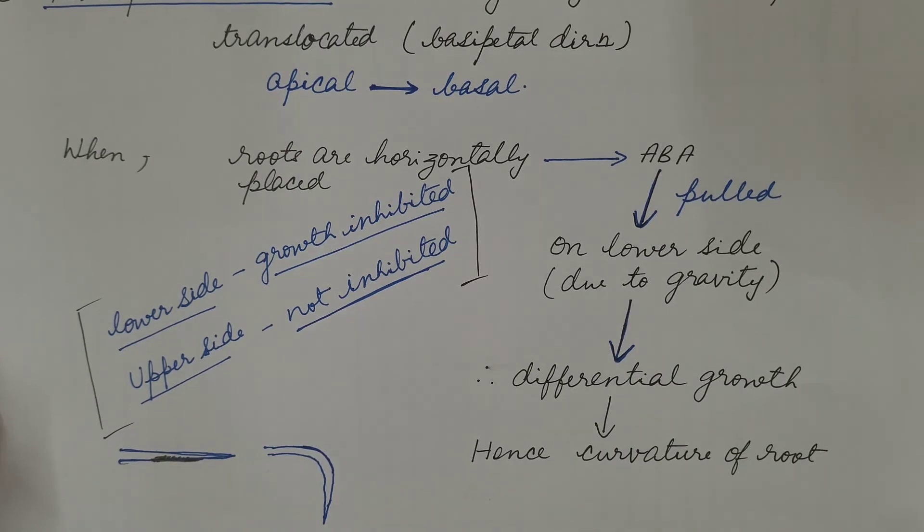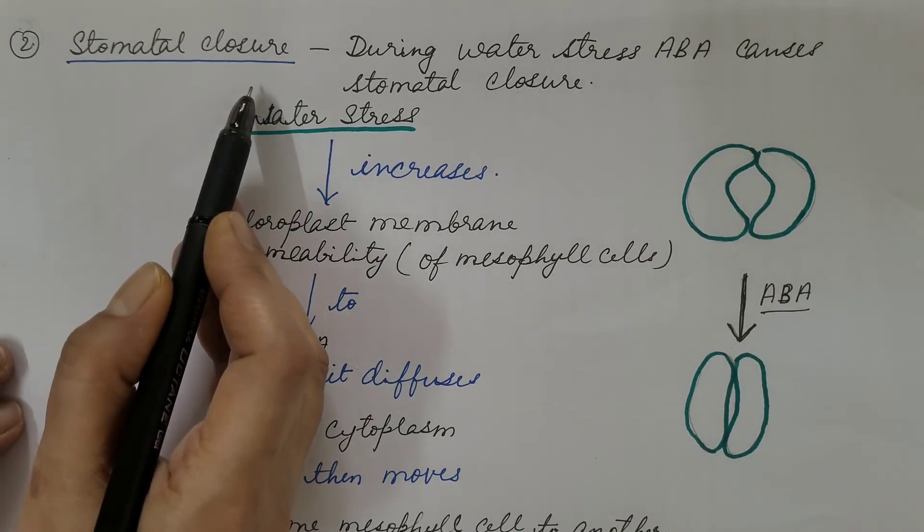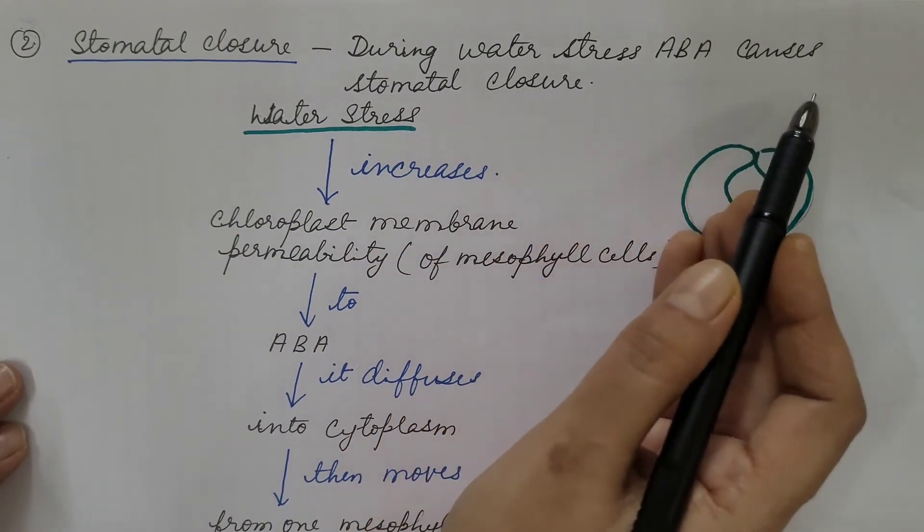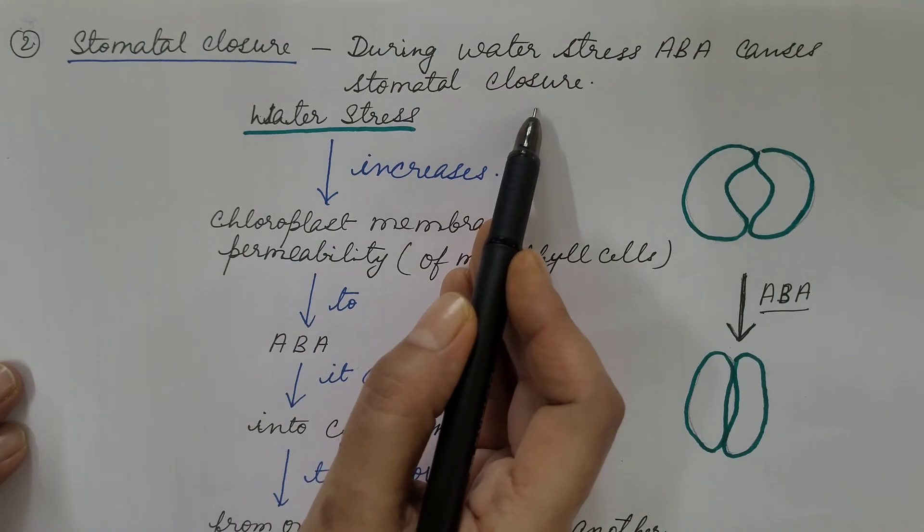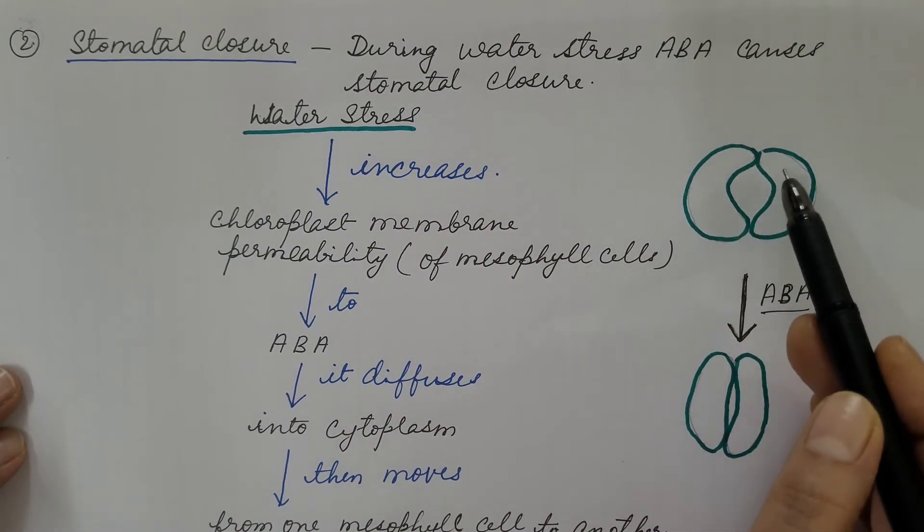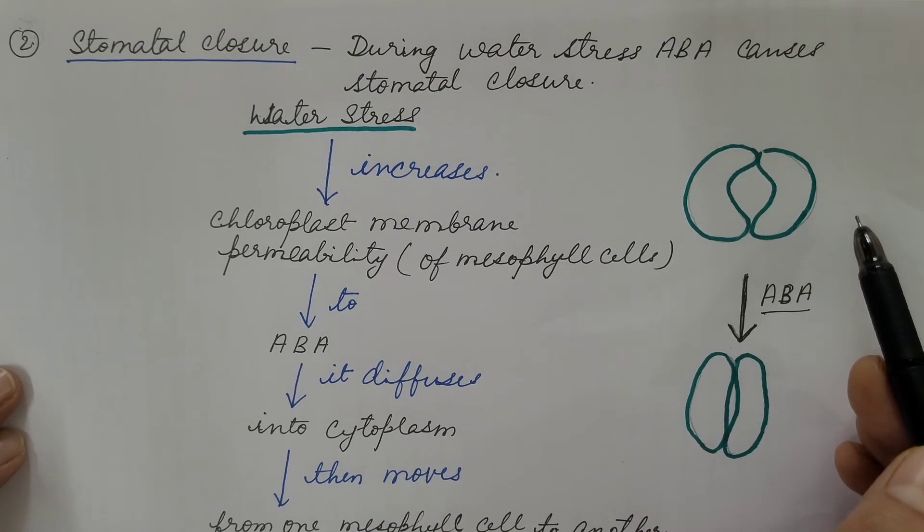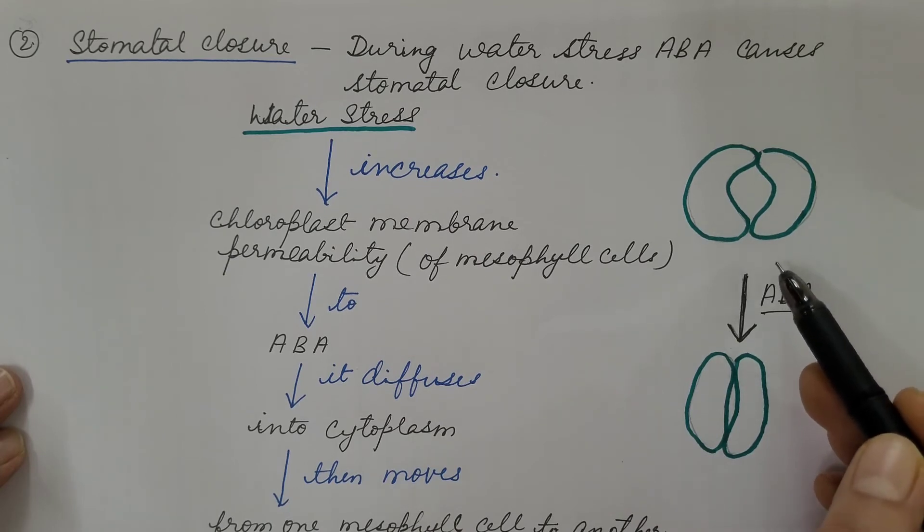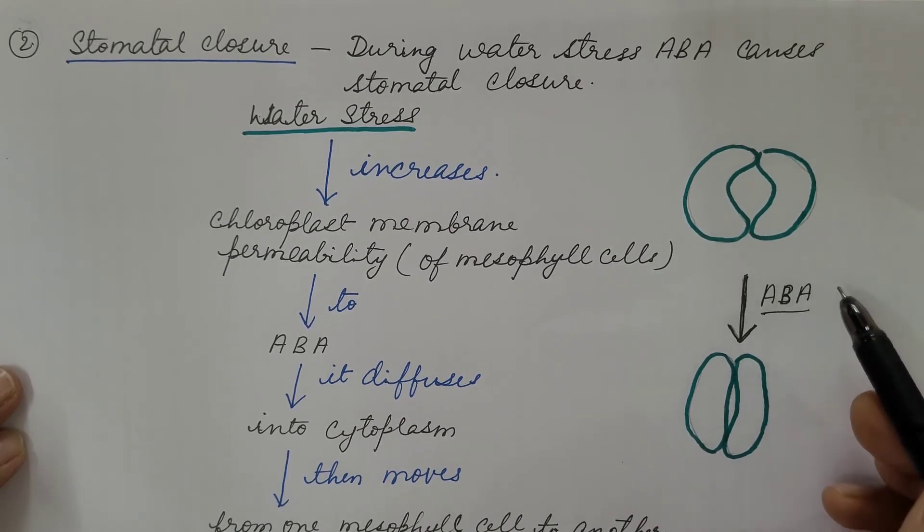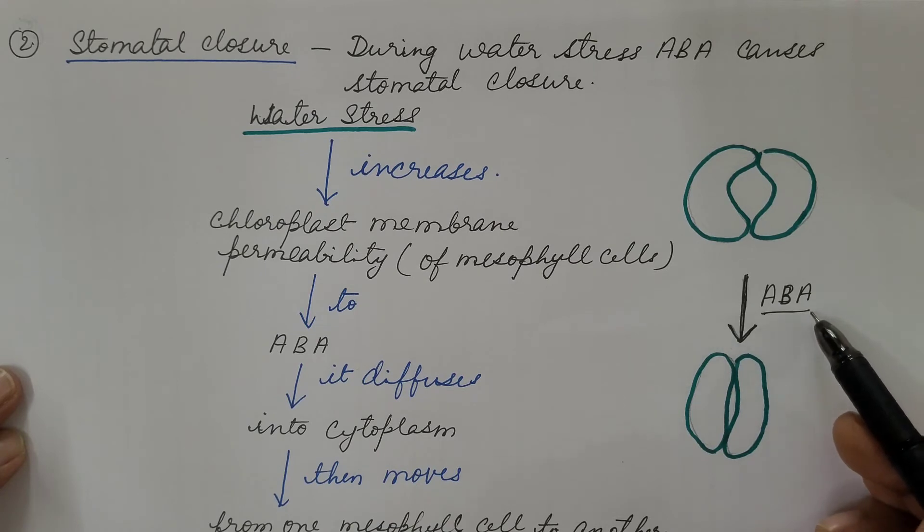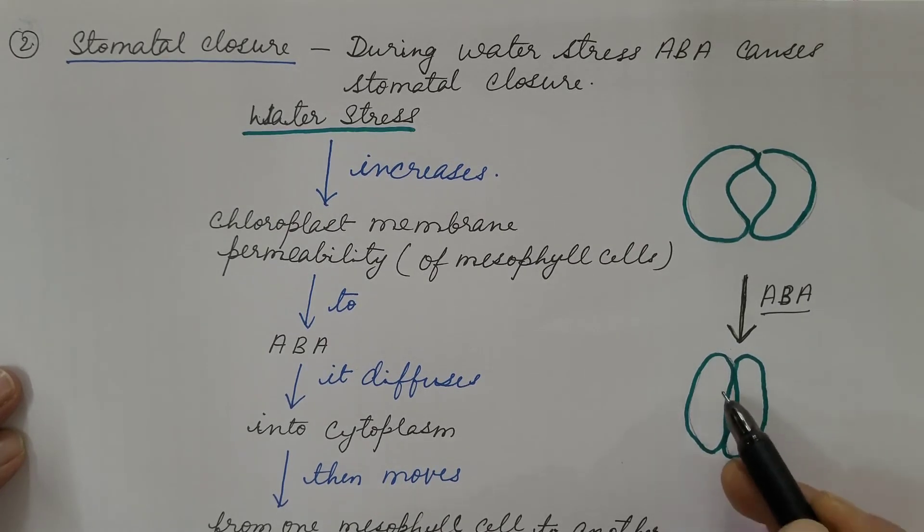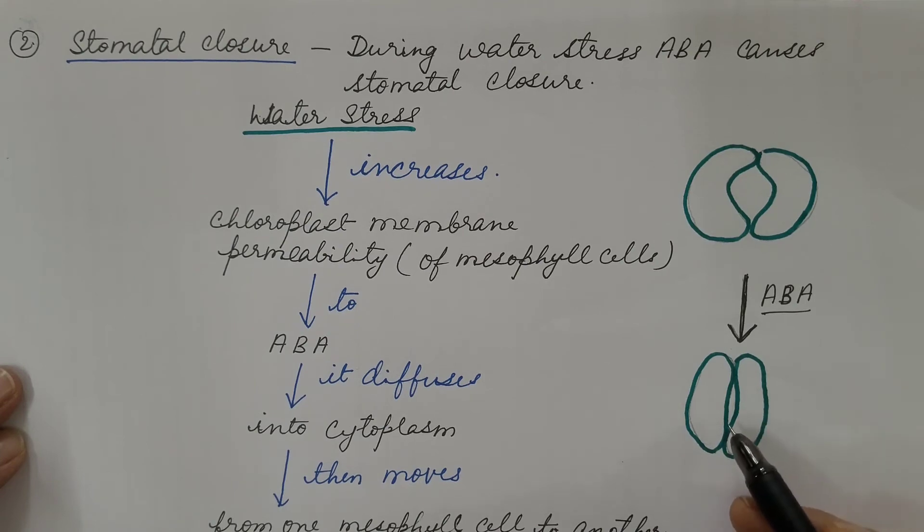Second is stomatal closure. During water stress, abscisic acid causes stomatal closure. So this is the stomata which is open when water is present and guard cells are turgid. In the absence of water, that is during water stress, abscisic acid results in stomatal closure. These are the guard cells which are flaccid and the stomata is closed.